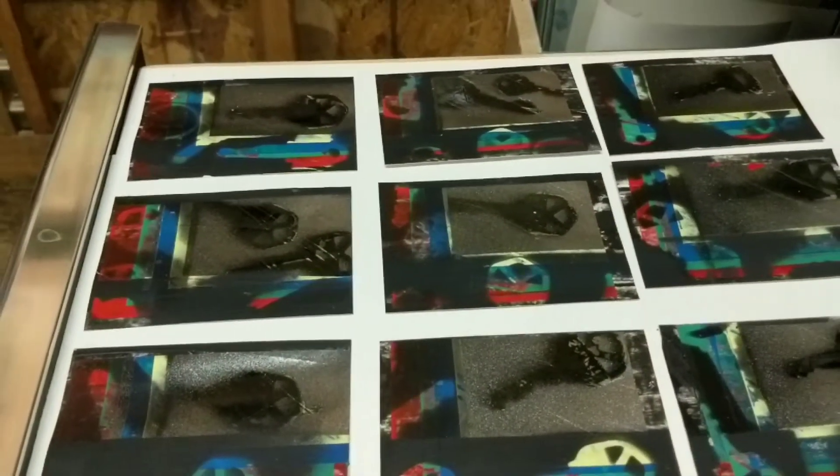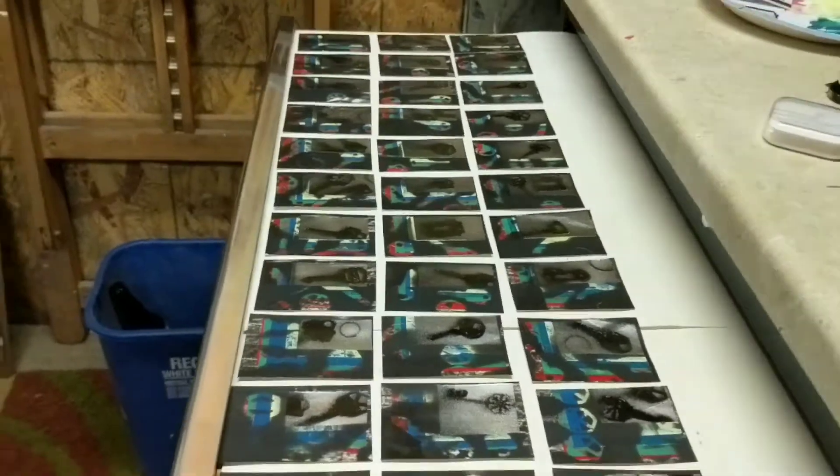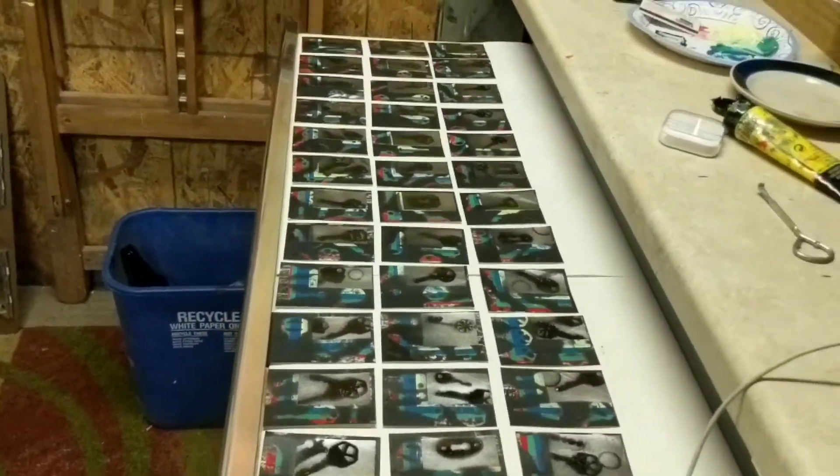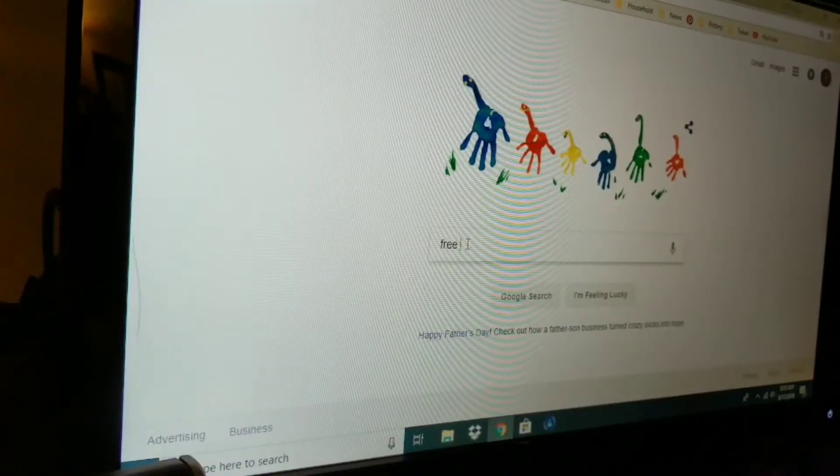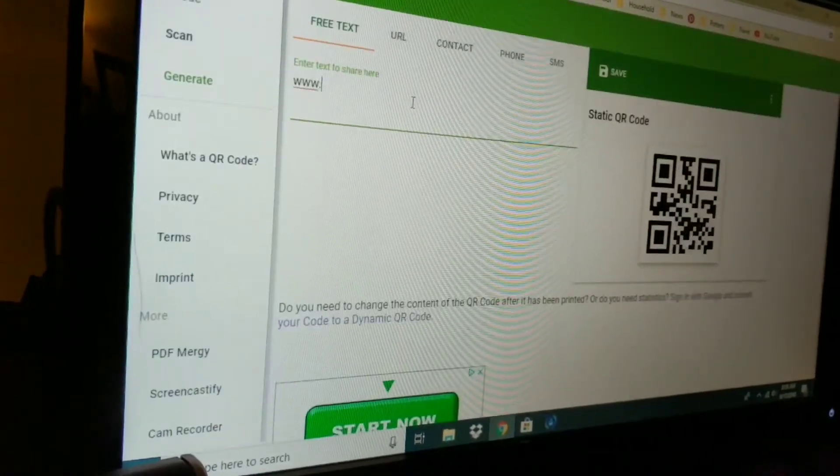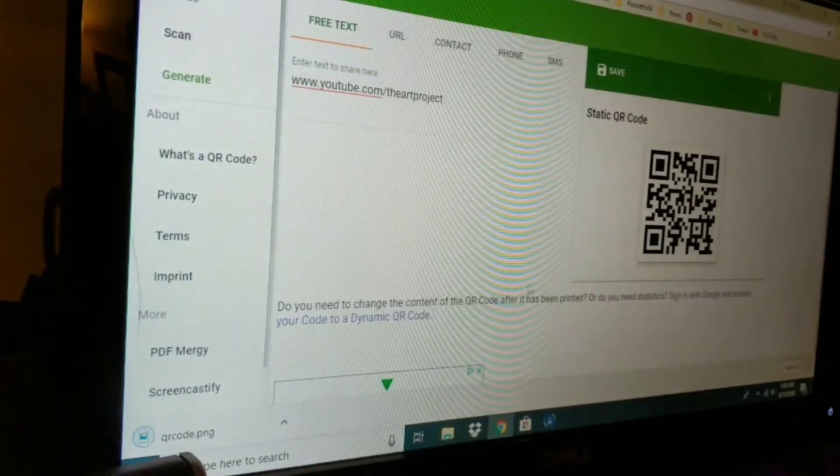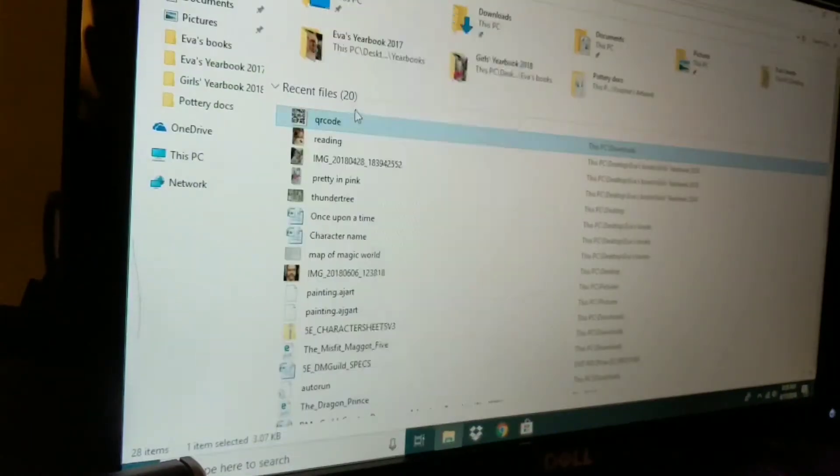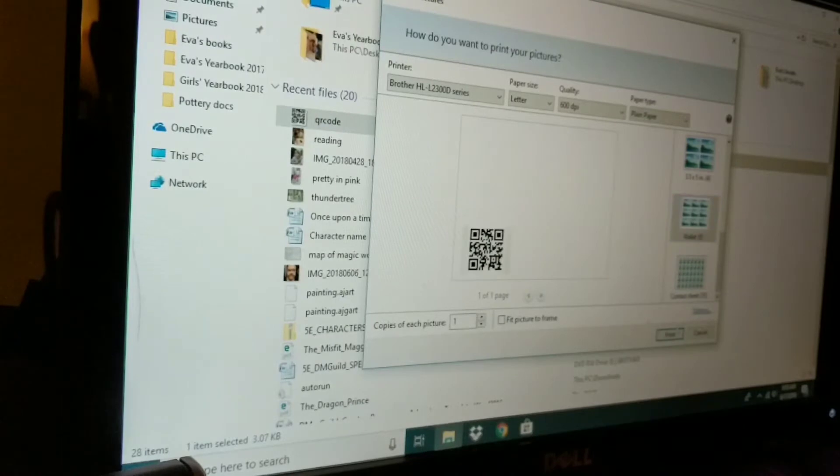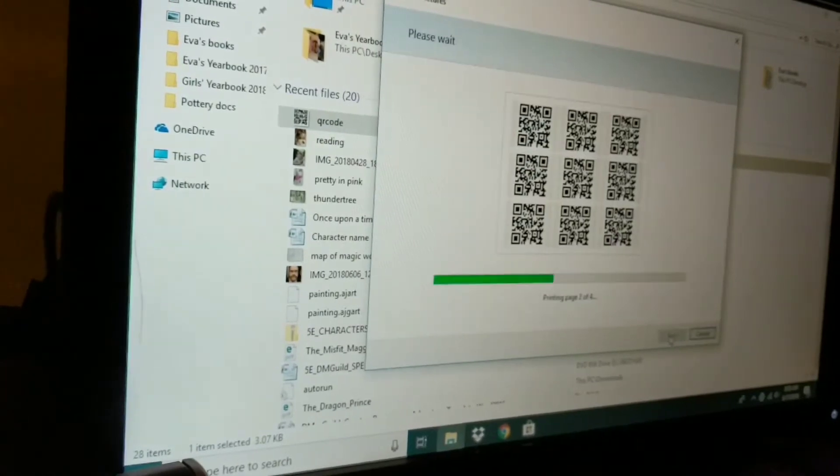After I did that, I decided to put a QR code on the back of each card so that when I gave them away, people could find them, and then they could find my YouTube channel. So here I am on the internet, and I looked up free QR code generator, and I created one for the YouTube channel, youtube.com slash the art project. I printed them out, nine to a page.